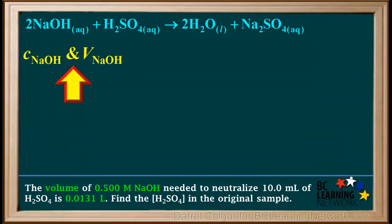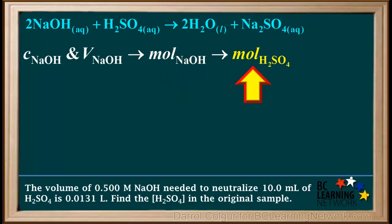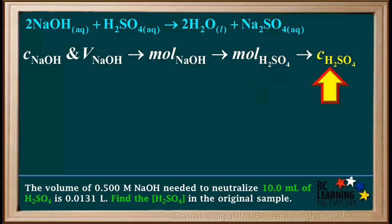So we know the reactant we can find the moles of is NaOH. Now we'll create a plan: we start with the concentration and volume of NaOH to calculate moles of NaOH, then use the coefficients in the balanced neutralization equation to calculate moles of H₂SO₄, and finally use the moles of H₂SO₄ and the volume of the solution to calculate the concentration of H₂SO₄.